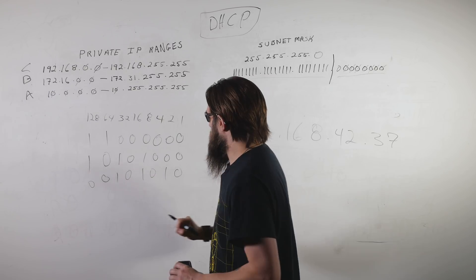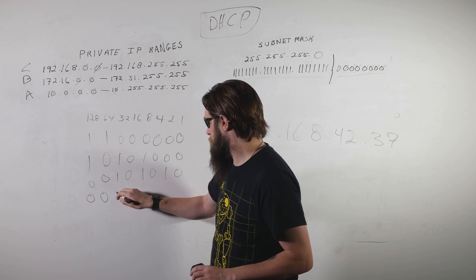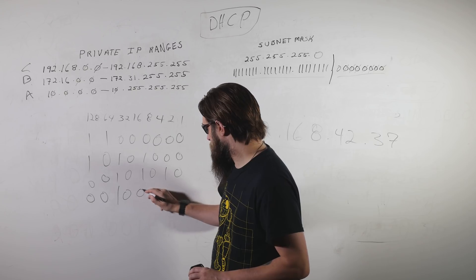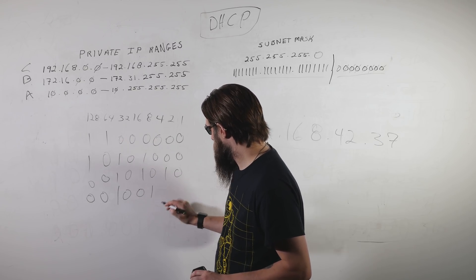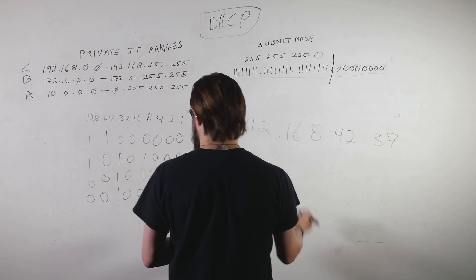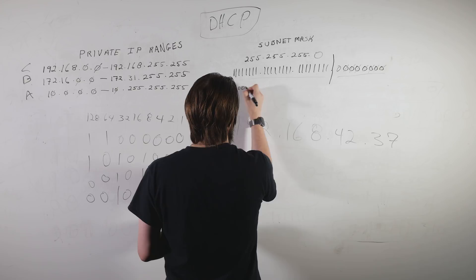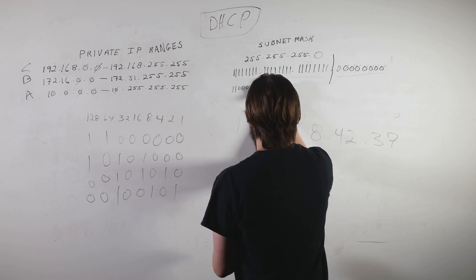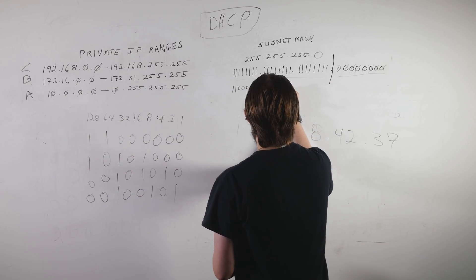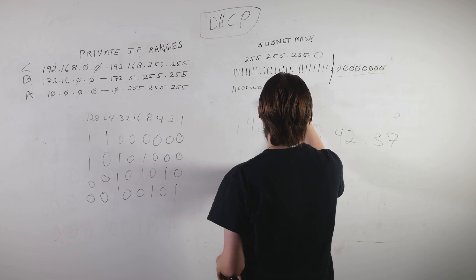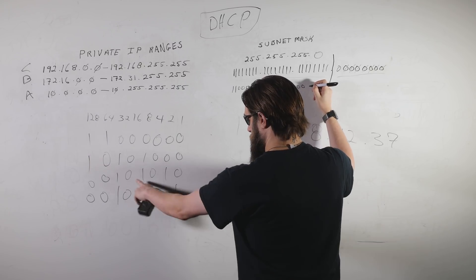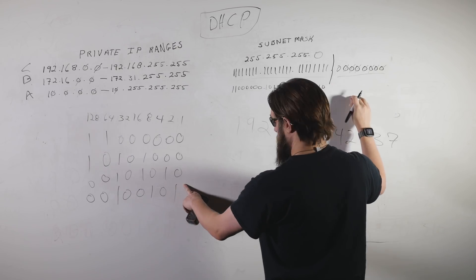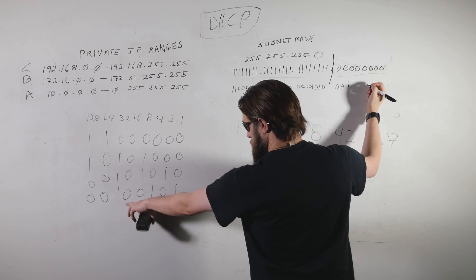For 37: we don't need 128 or 64. We need 32, not 16, not 8 — since 8 would give 40. A 4 gives 36, so we need 4 plus 1 to reach 37. So our full IP address 192.168.42.37 in binary is: 11000000 . 10101000 . 00101010 . 00100101.